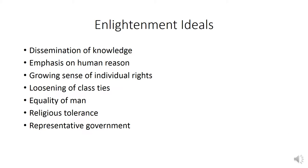Let us begin by painting a picture in broad strokes of the political and intellectual climate of the time. As the classical period begins around 1750, we are in the age of the Enlightenment, with its emphasis on individual rights, equality rather than hierarchy, human reason as the source of authority, and the collection and dissemination of human knowledge. This period saw an increase in literacy and the publication of massive encyclopedias intended to encompass all human knowledge.